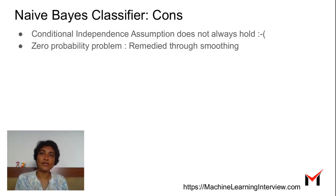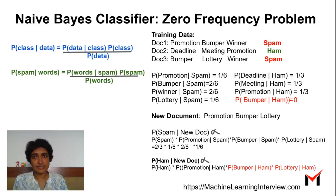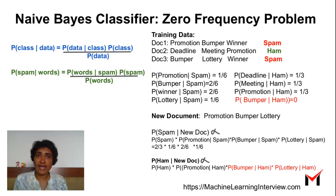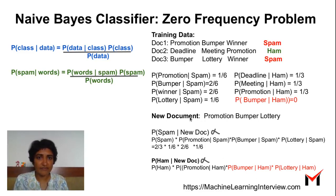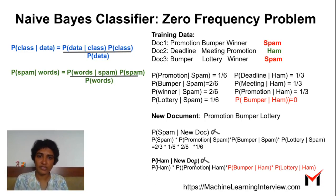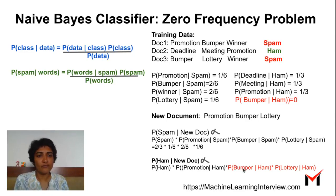The next disadvantage is the zero probability problem. If we encounter a feature that did not occur in a particular class in the training data, we end up getting zero probabilities on the test data. For example, with a new document containing 'promotion', 'bumper', and 'lottery': computing probability of HAM given the new document leads to problems, because 'bumper' is not present in any of the HAM documents. So probability of 'bumper' given HAM ends up being zero.